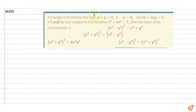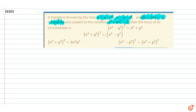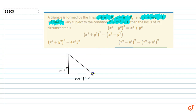The question given is: a triangle is formed by the lines x plus y equals 0, x minus y equals 0, and lx plus my equals 1. If l and m vary subject to the condition l squared plus m squared equals 1, then find the locus of the circumcenter. The two perpendicular lines are x plus y equals 0 and x minus y equals 0, and the third line is lx plus my equals 1.